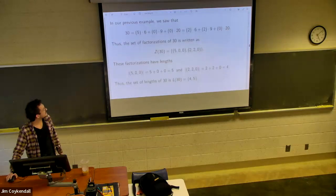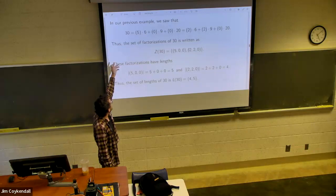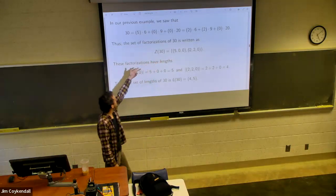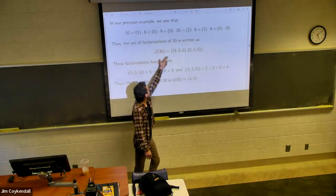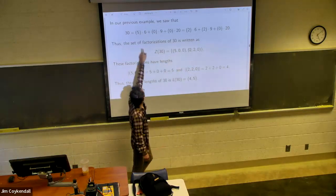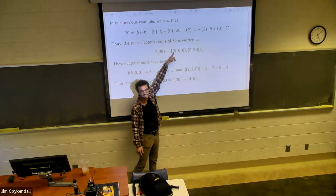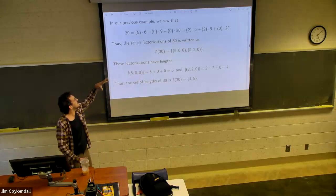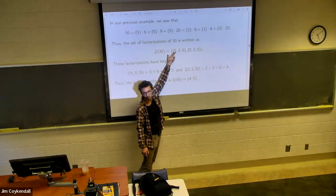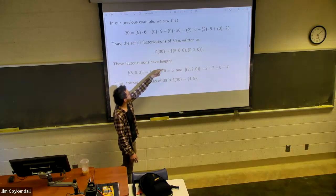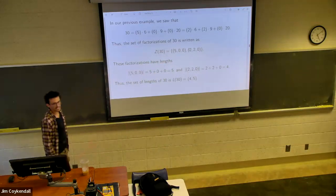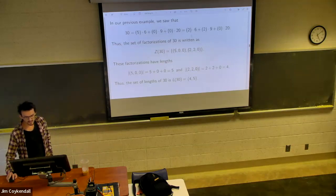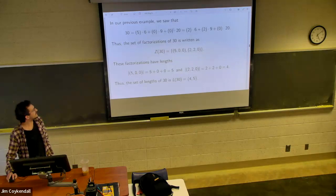And then we denote the set of lengths by L of n, L for length. All right, so now we're going to continue from our 30 in our chicken McNugget monoid. So as we previously saw, the two different ways that you can factor 30. So the set of lengths, five, zero, zero, two, two, zero. So all we're doing is taking the coefficients and putting them in the coordinate that represents that generator. So the first generator, six, five copies, we put in the first coordinate, the zero of the other two. And in a similar fashion, we do it for the other one. And then we say, that's the set of lengths. It's a lot easier to work with these ordered triplets than writing out the entire expression every time.